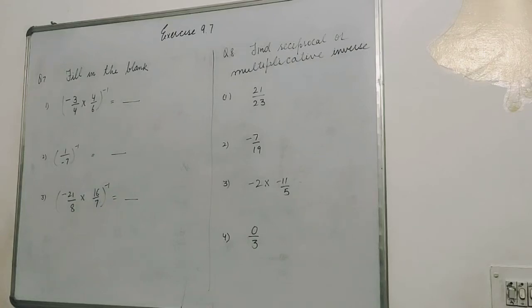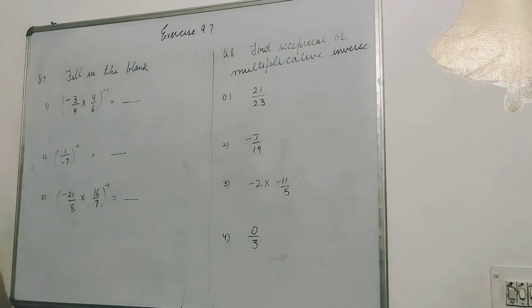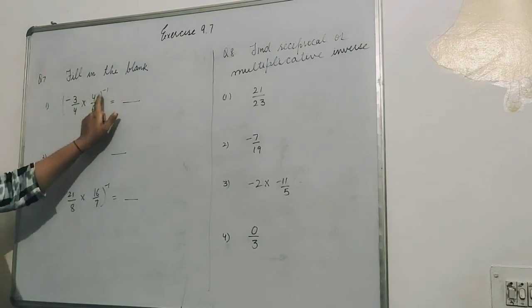Good morning students. Questions 1 to 6 we have discussed, now question number 7, exercise 9.7, fill in the blanks. This is the first part: minus 3 upon 4 into 4 upon 6, so this is in bracket with power minus 1.